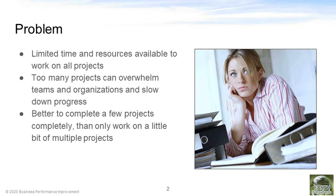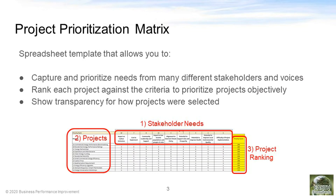So how do we figure out which projects are going to be the most beneficial? The project prioritization matrix is a spreadsheet that allows you to capture and prioritize the needs from all the different stakeholders and voices in the community. This is an approach I use in a corporation to take all the different project ideas and select the best ones to pursue first for Six Sigma and lean initiatives.